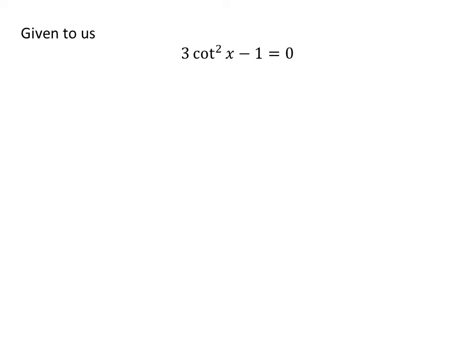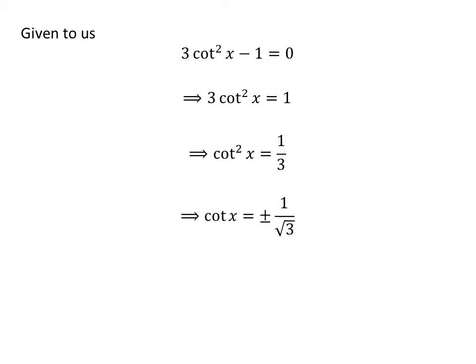We are given 3 times square of cotangent of x minus 1 is equal to 0. Taking minus 1 from left to right gives us 3 times square of cotangent of x is equal to 1. Dividing the whole expression gives us square of cotangent of x is equal to 1 upon 3. Taking the square root gives us cotangent of x is equal to plus and minus 1 upon square root of 3.